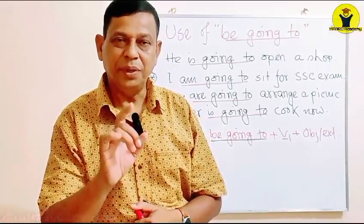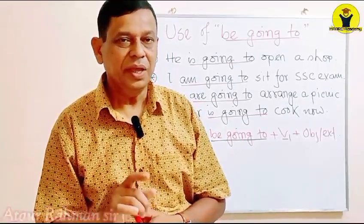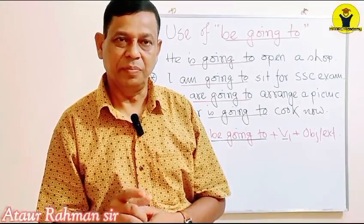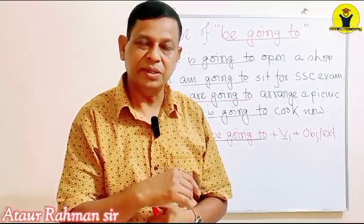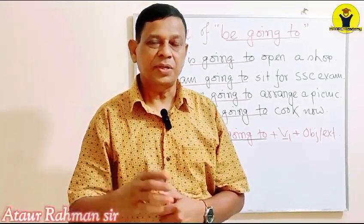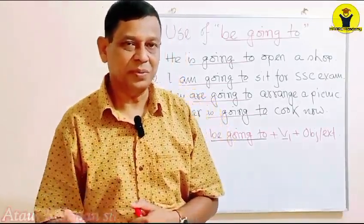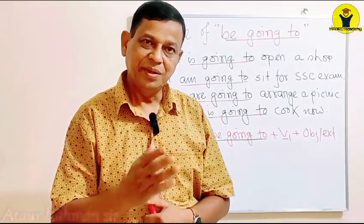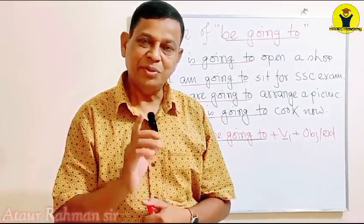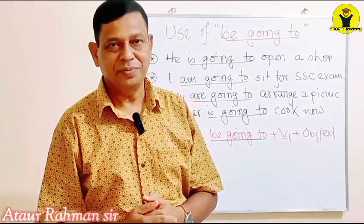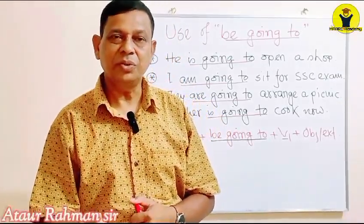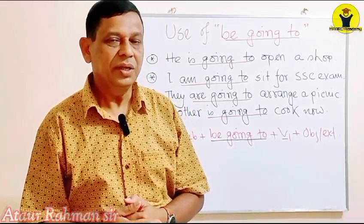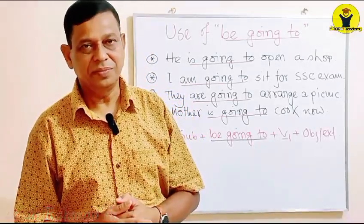Remember: 'be going to' — 'be' means 'am', 'is', or 'was'. But here in this structure, the past form will never come. Past form will not come — remember. Am going to, is going to, are going to — but 'was going to' and 'were going to' will not be used in this structure, in this sentence.